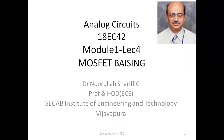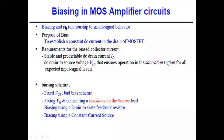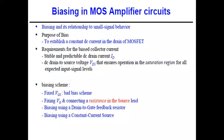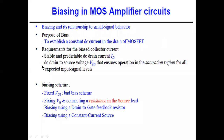This is Unlock Circuits 18EC42, Module 1, Lecture 4, discussing MOSFET biasing. The purpose of biasing is to establish a constant DC current in the drain of the MOSFET — the drain current ID — and the drain-to-source voltage VDS, ensuring stable and predictable DC operating conditions.